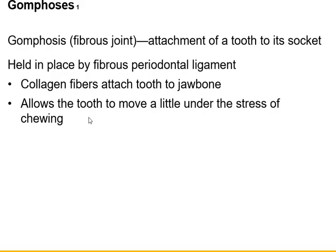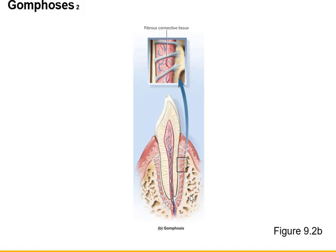The tooth can move slightly — not very much, you don't want it moving around — but we take advantage of this ability to move slightly to put braces on people. If you continue to put pressure and continue to put pressure, you'll actually remodel the jaw and move the teeth around a little bit. It takes quite some time. Here's a picture showing how the jaw holds the tooth in place with fibers.